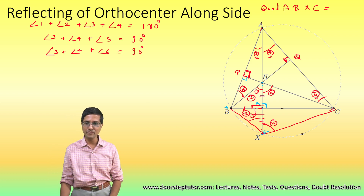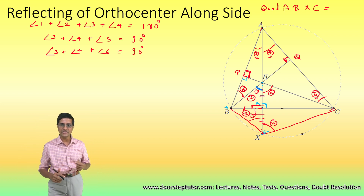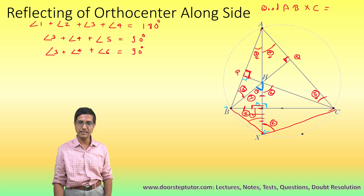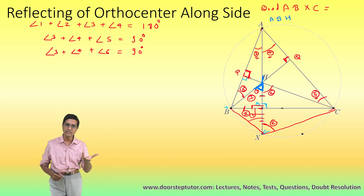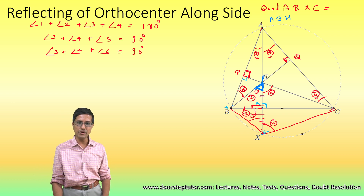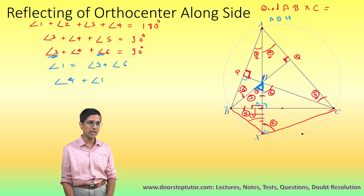Now we use the exterior angle property. Angle 1 is the exterior angle to triangle ABH, formed by extending side AH. So angle 1 equals angle 3 plus angle 6. Substituting into our equation, angle 3 plus angle 6 becomes angle 1, meaning angle 4 plus angle 1 equals 90 degrees.